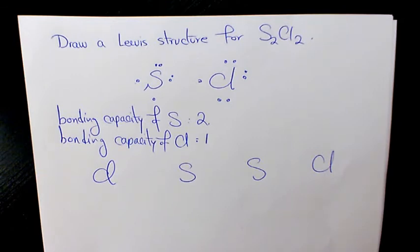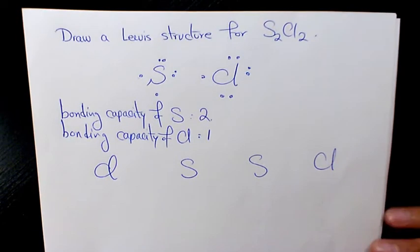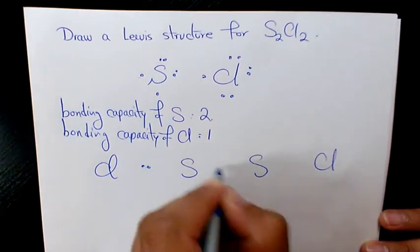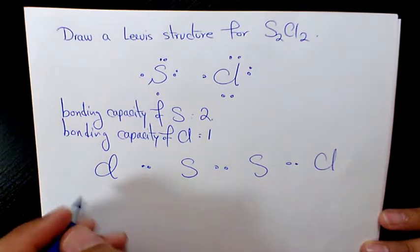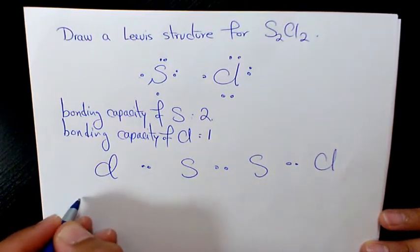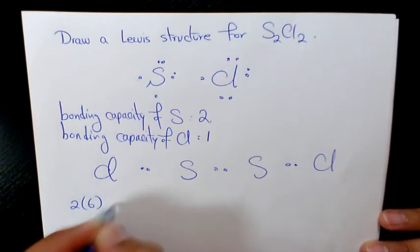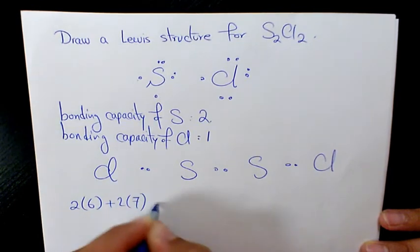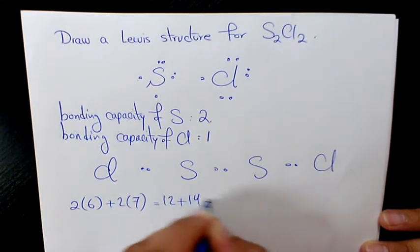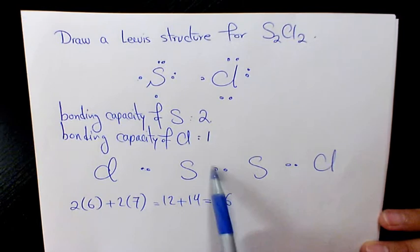So we have two times six plus two times seven. That's 12 plus 14, which equals 26. And we used six bonding electrons already.